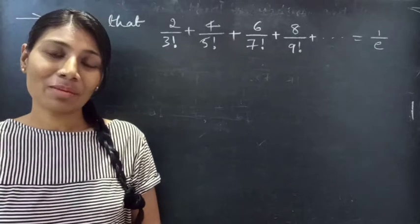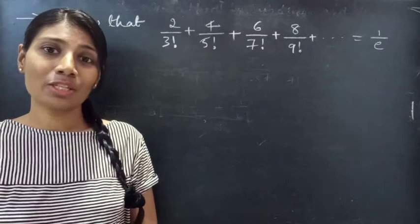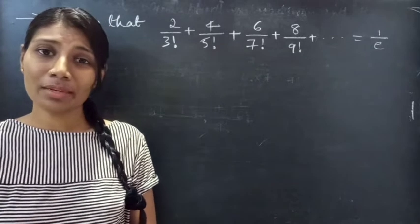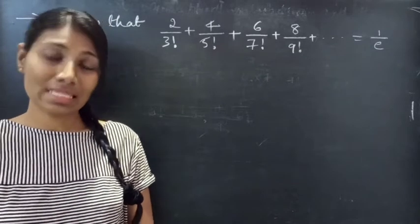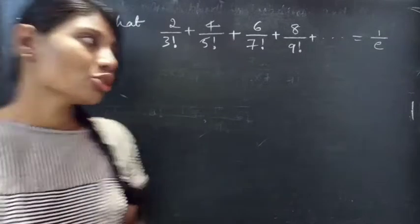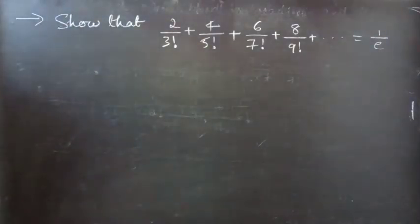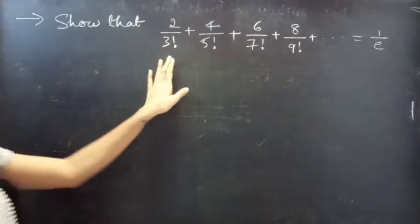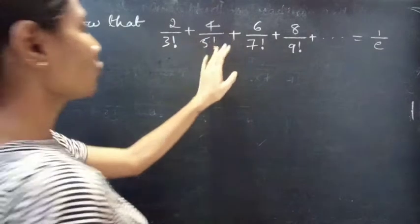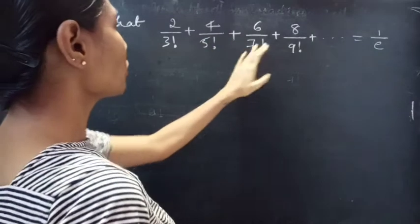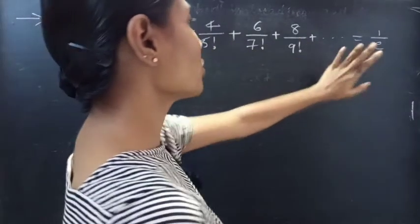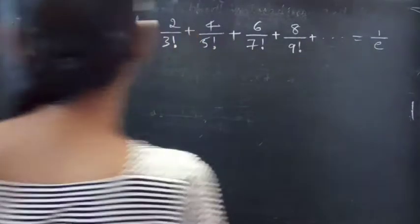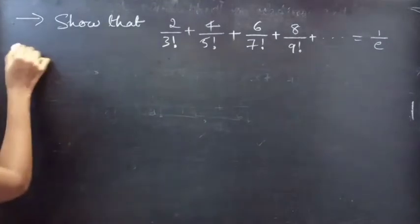Hello everyone, this is Jay Kalpana here. In this video we are going to see a problem from exponential series. So let's get started. Problem: Show that 2/3! + 4/5! + 6/7! + 8/9! + ... equals 1/e. Solution.